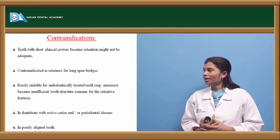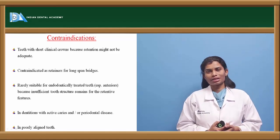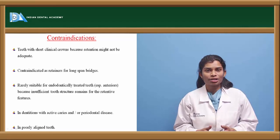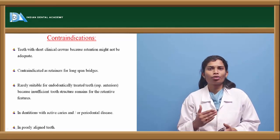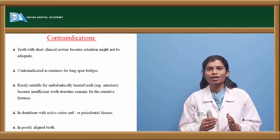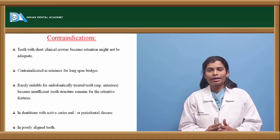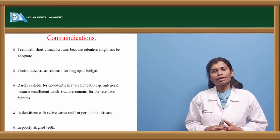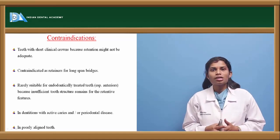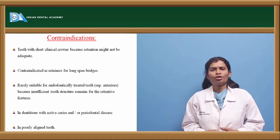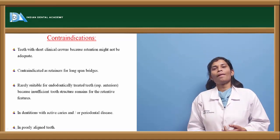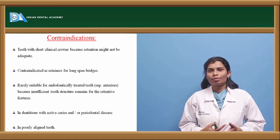Contraindications: Teeth with short clinical crowns, where the length is very less, will compromise retention — partial veneer crowns are not suitable here. For long-span FPDs, partial veneer crowns cannot serve as good retainers. They are rarely suitable on endodontically treated teeth because such teeth become brittle and change shape slightly, increasing the risk of fracture. There will also be problems with shade matching since one part of the tooth structure is left uncovered.